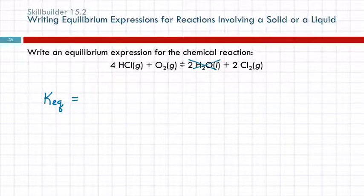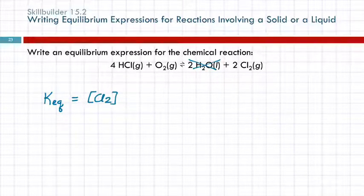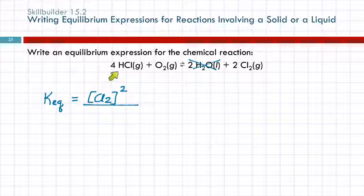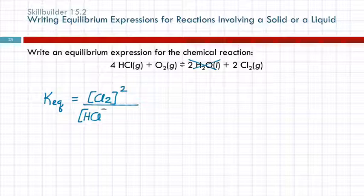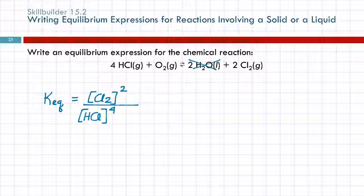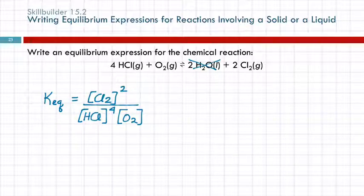The other product is a gas, so we're going to have the concentration of Cl2. That's going to be squared because it has a coefficient of 2. Then we divide by the reactants. The first reactant is a gas, so we need to include that — HCl. The coefficient is 4, so the exponent is 4. Oxygen is also a gas, so we need to include O2. It has no coefficient, so we don't write an exponent — it's an implied 1 in both cases. Any questions?